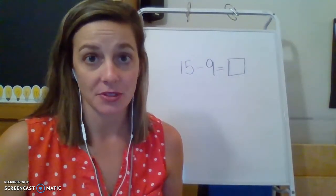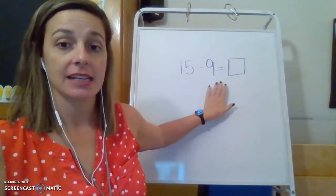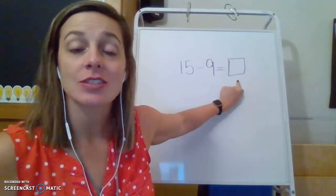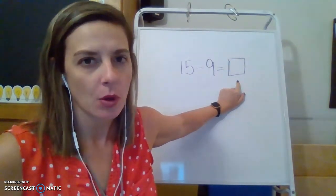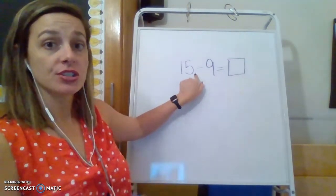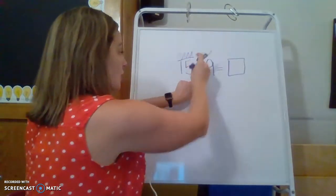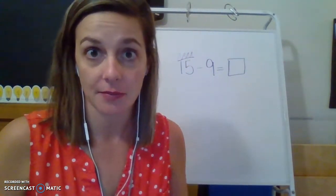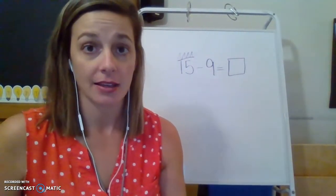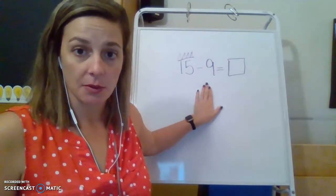One last example together. The last example is 15 minus nine equals something. So in this problem, our missing addend is all the way at the end. Now let's think about what we know about subtraction. In subtraction, we know that the first number is the king of the math mountain and there are no numbers in the equation that can be bigger than the king. So let's practice counting on and counting back. When I count on, I start with the small number and stop at the big number. Here we go.